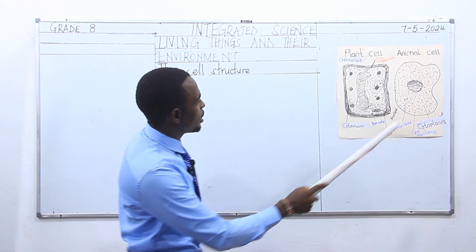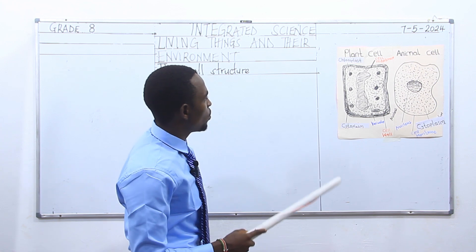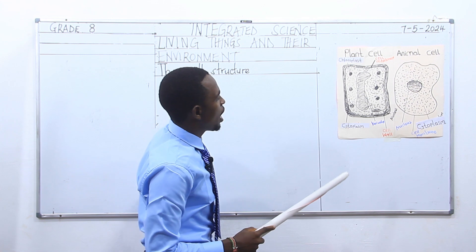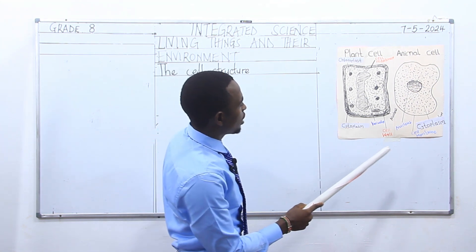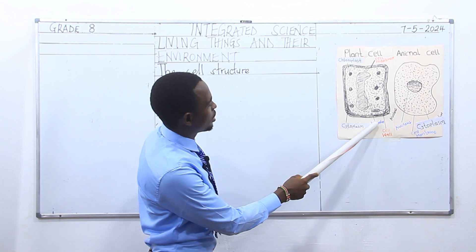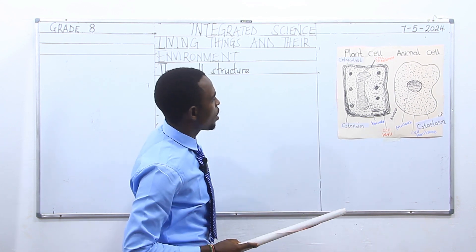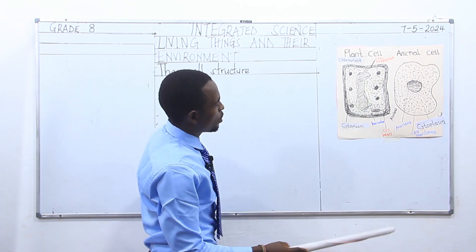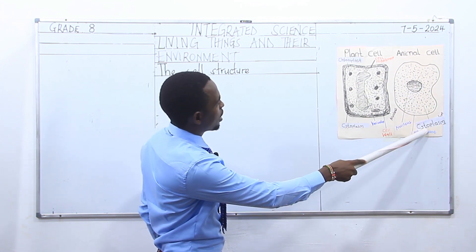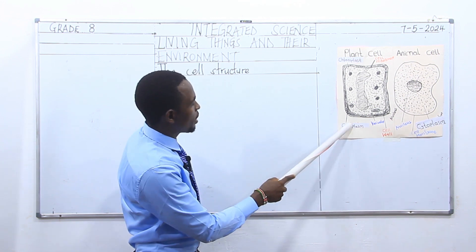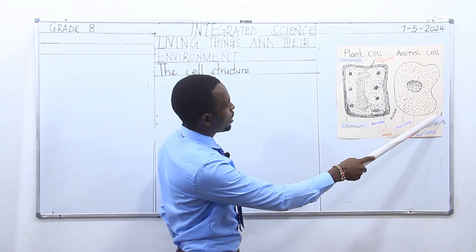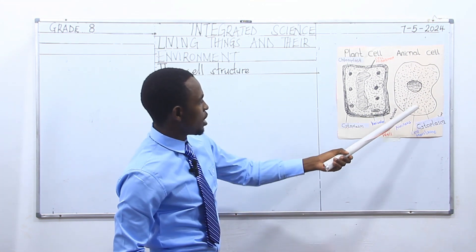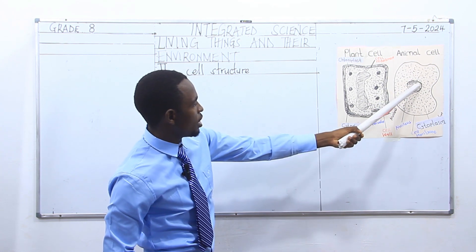However, there are some parts found in a plant cell that are not in an animal cell. For example, an animal cell does not have a chloroplast. The similar parts include the cell membrane, which is present in both. You also have the cytoplasm and the nucleus in both plant and animal cells.